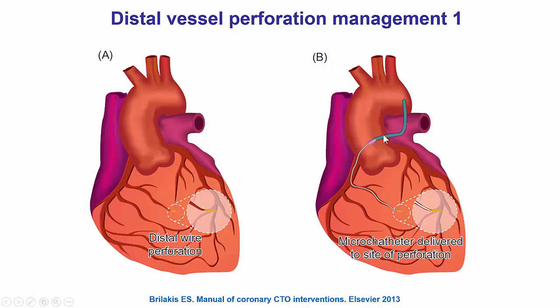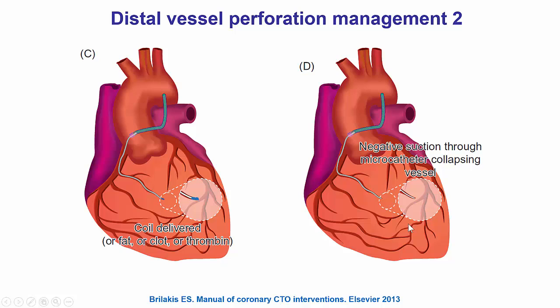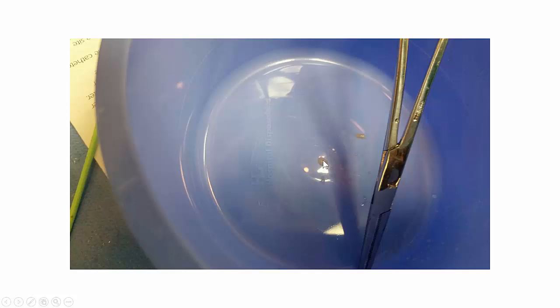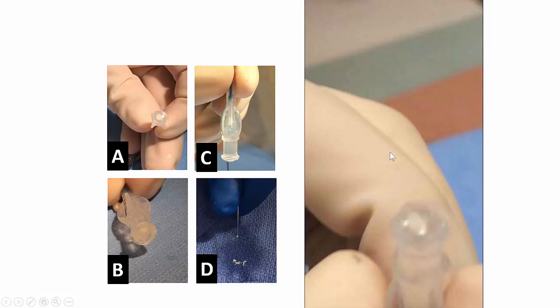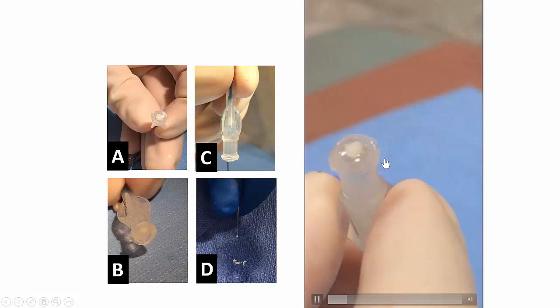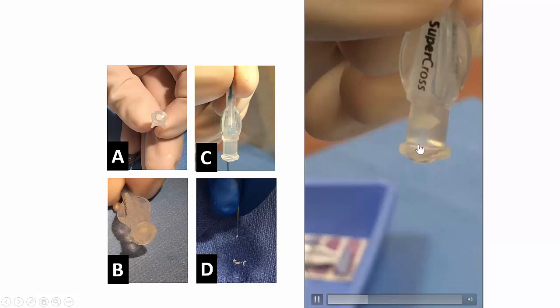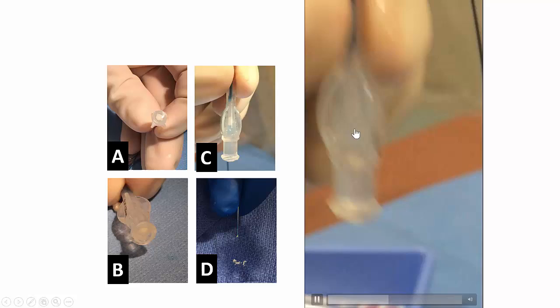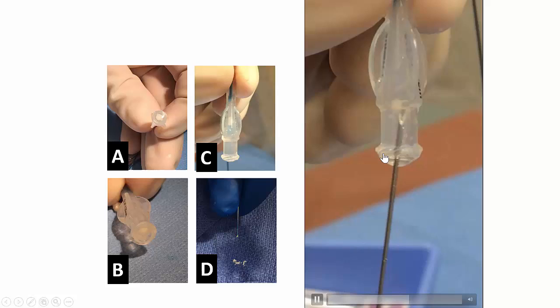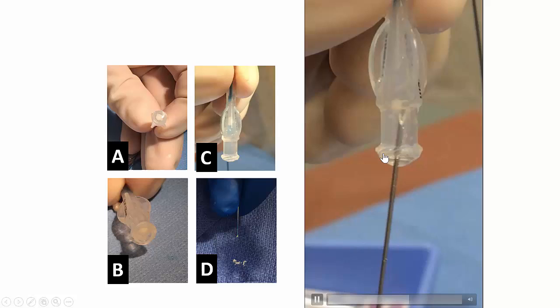How is embolization done? The first step is to deliver a microcatheter as close as possible to the site of the perforation, and then the microcatheter is used to deliver fat or a coil. The fat can be harvested through the arterial access site if a femoral approach is used. Alternatively, a very small incision can be made in the groin to harvest a little piece of fat using a hemostat — these are the little fat globules. It can be challenging to load the fat into a microcatheter because fat tends to float. One way is to turn it upside down so the fat goes up, and then with the aid of an introducer or needle, the fat can be advanced to the proximal hub and injected using a small syringe.